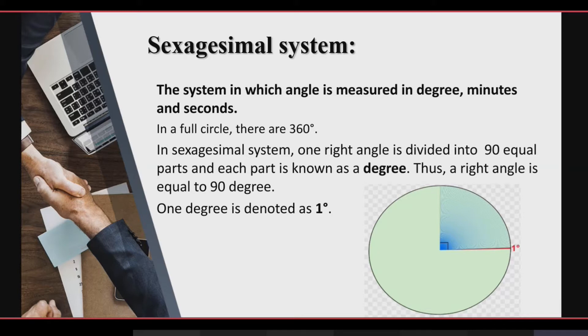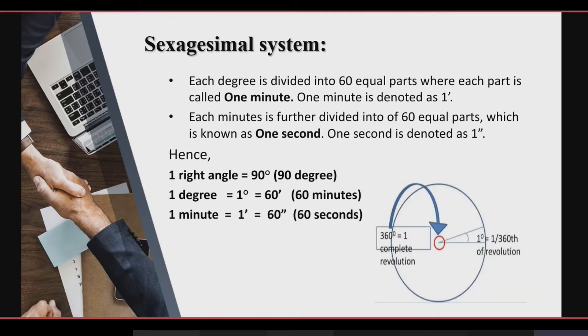So when we denote one degree, we add a small circle symbol. Next, if we divide one degree into 60 equal parts, then we call each part a minute. So one minute is denoted as one dash. And if we divide each minute further into 60 equal parts, then we call each part a second, and one second is denoted as one double dash.